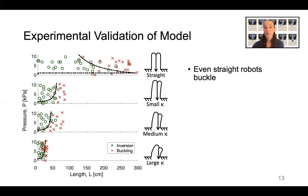However, even straight robots buckle, so manipulating the robot curvature is not a solution to the buckling problem. We also see that even at high pressures above a certain length, the robot will buckle. So changing the pressure is not a solution to the buckling problem either.